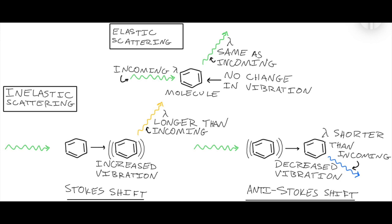In elastic scattering, the same energy that goes in comes out. There is also inelastic scattering, in which some energy is absorbed by the molecule, particle, or surface, and then the scattered light has different properties than the light that went in. This is sometimes called Raman scattering, in which the incoming light excites a vibratory transition. The light wave comes in, the molecule was originally in the ground vibrational state, becomes excited, and the scattered photon has less energy because some of that energy went into exciting that vibrational state. That's a type of inelastic scattering.